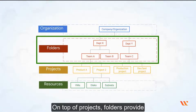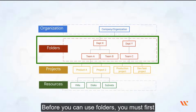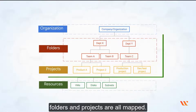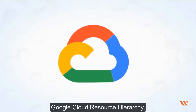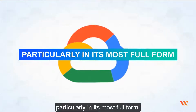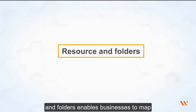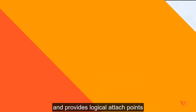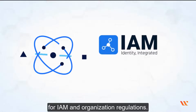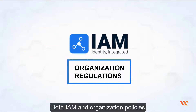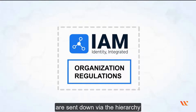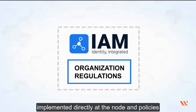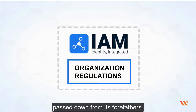On top of projects, folders provide an extra organizing method. Before you can use folders, you must first have an organization resource. Under the organization resource, folders and projects are all mapped. The Google Cloud Resource Hierarchy, particularly in its most full form which includes an organization resource and folders, enables businesses to map their organizations onto Google Cloud and provides logical attach points for IAM and organization regulations. Both IAM and organization policies are sent down via the hierarchy, and the effective policy at each node is the result of policies implemented directly at the node and policies passed down from its forefathers.